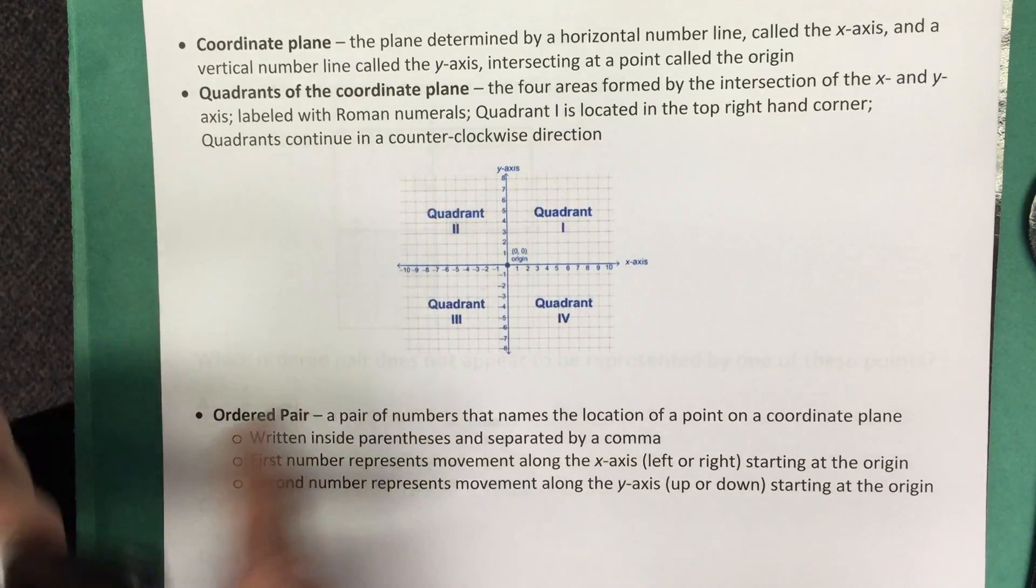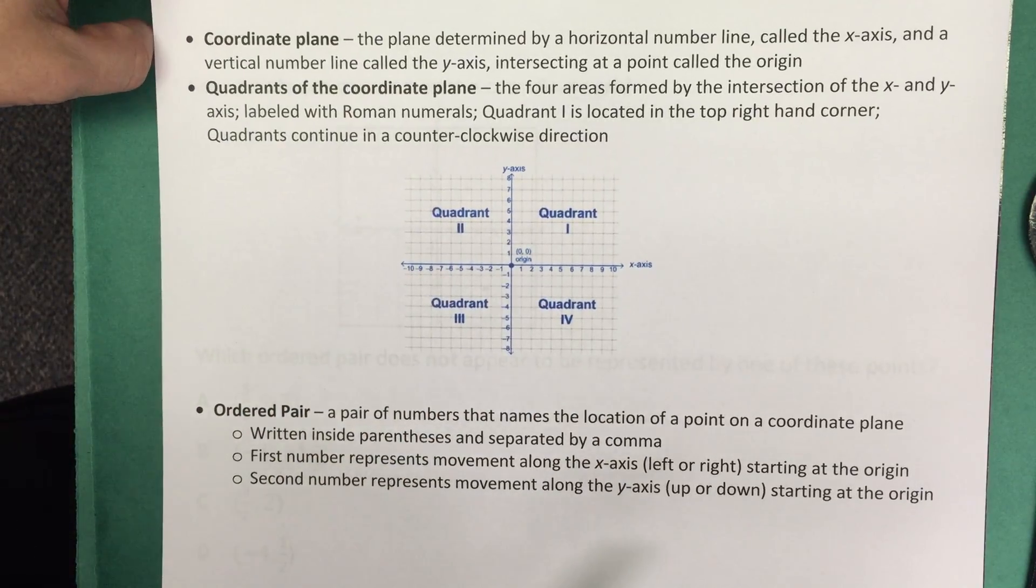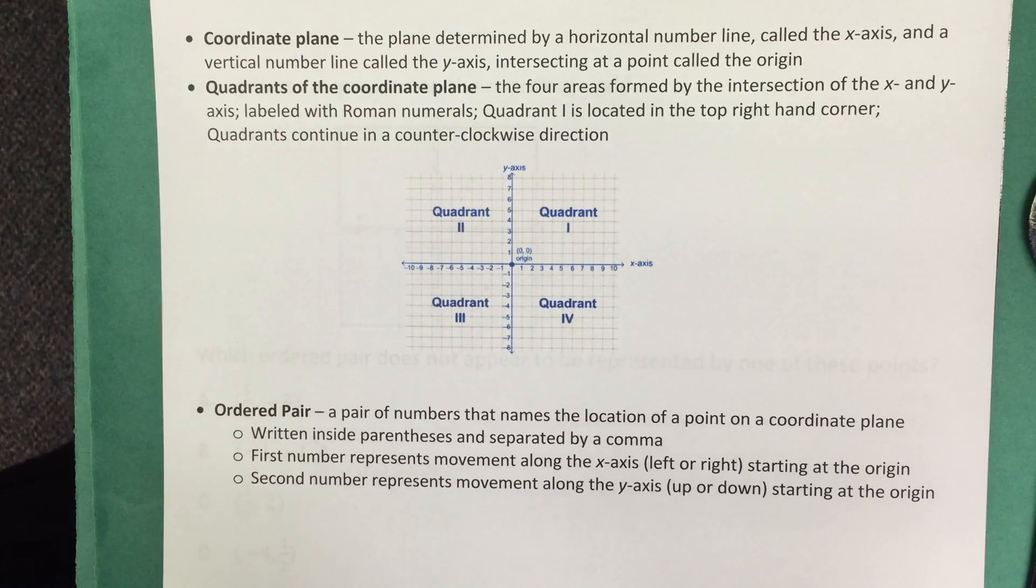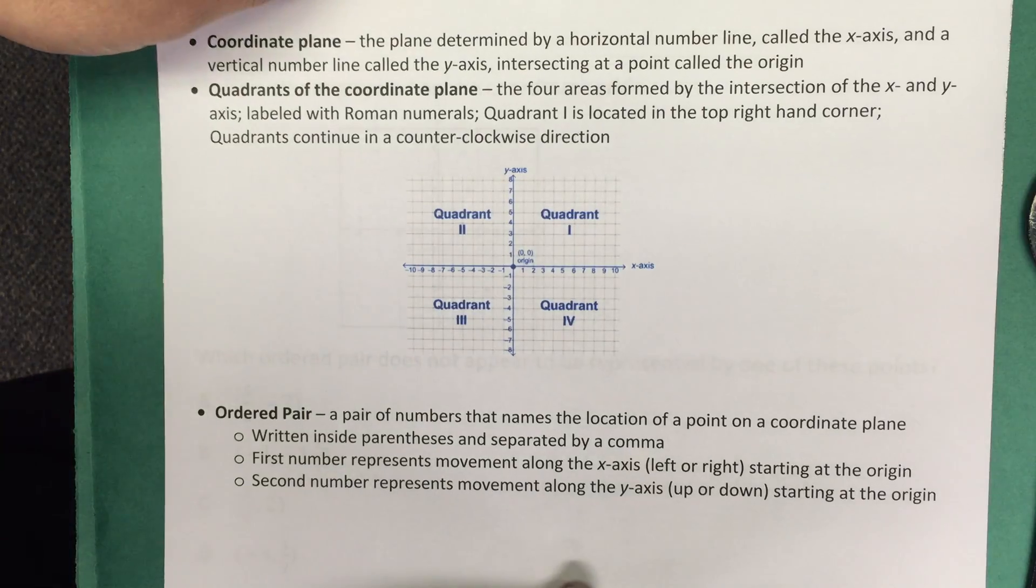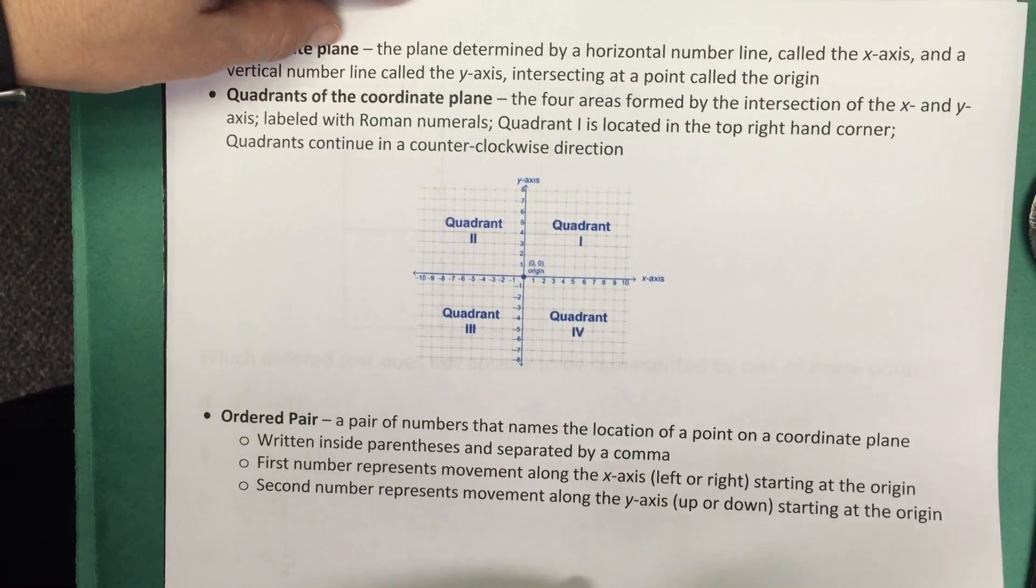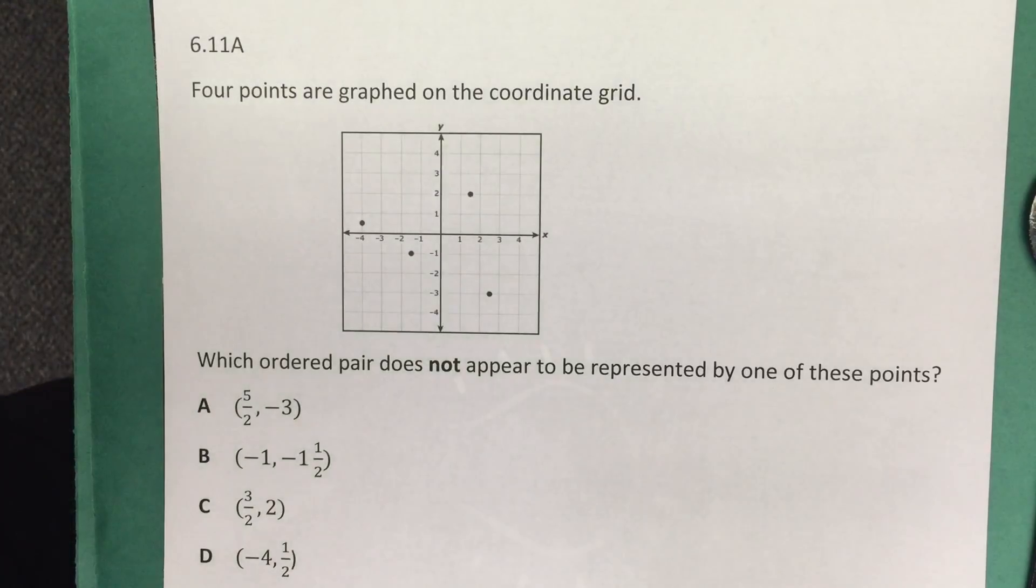An ordered pair is a pair of numbers that names the location of a point on the coordinate plane. It is written inside parentheses and separated by a comma. The first number represents movement along the x-axis, which is in the left or right direction, and the second number represents movement along the y-axis, which is up or down. And when you are plotting a coordinate pair, you always start at the origin.